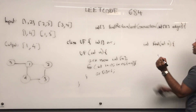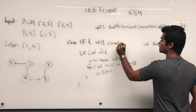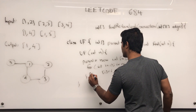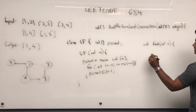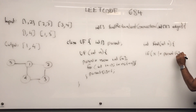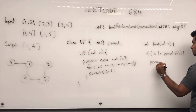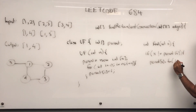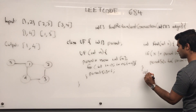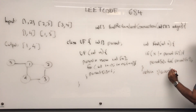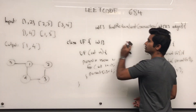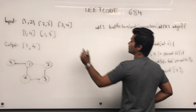Then the find method is going to be the standard find. I'll call this parent — ar of parent — that's more classic. The find function is going to be: if x is not equal to parent of x, then parent of x is going to be set to find of that — path compression — and then we return parent of x. So that's the find method, return type is integer.